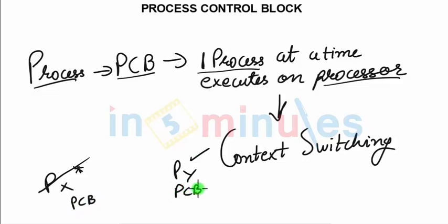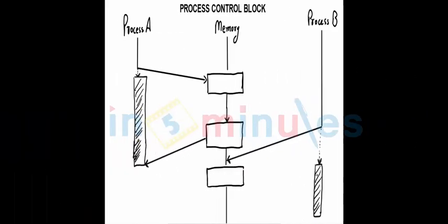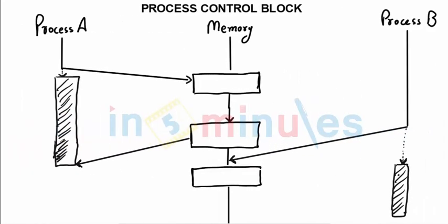Why? Because without PCB, your process cannot be executed. So let's try to understand how this context switching takes place. There is a small diagram in which we will explain how context switching is working.